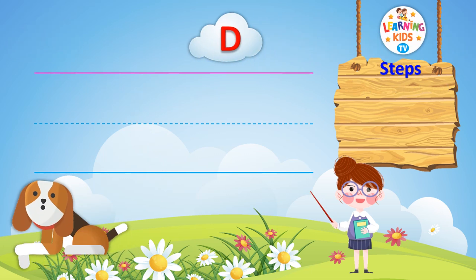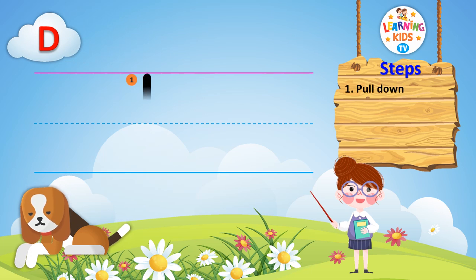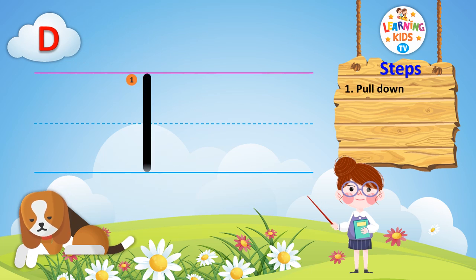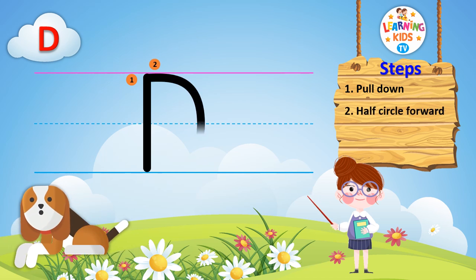Learn to write uppercase letter D. Step 1: pull down. Step 2: half circle forward.